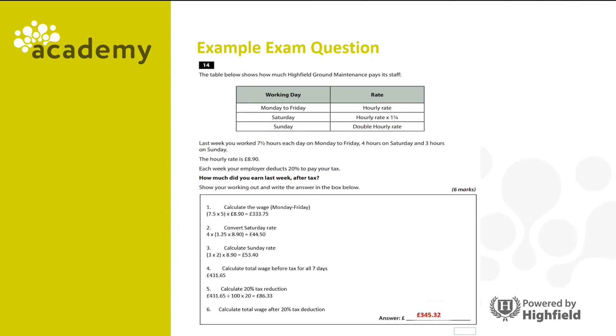Did you get it right? The answer is £345.32. Now there are six marks for this question, so you need to cover each stage of the calculation in order to get the full six marks, and make sure you write those down. First, calculate the wage Monday to Friday. Second, calculate the Saturday rate. Third, calculate the Sunday rate. Fourth, calculate the wage before tax for all seven days. Then calculate 20% for the tax reduction, and then calculate the total wage after the 20% tax reduction.